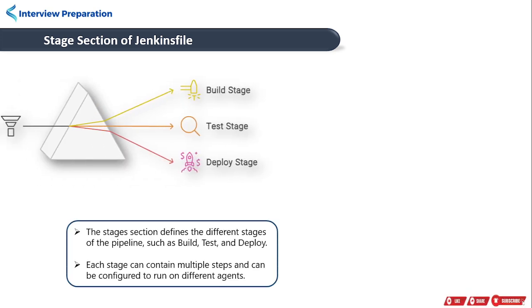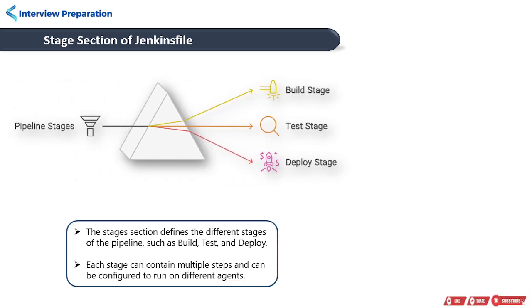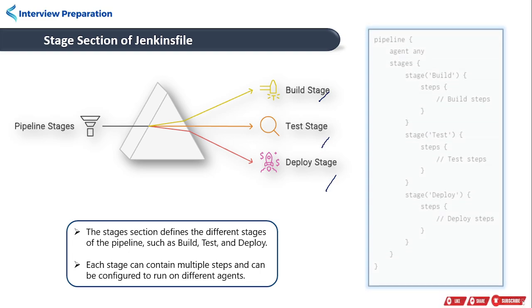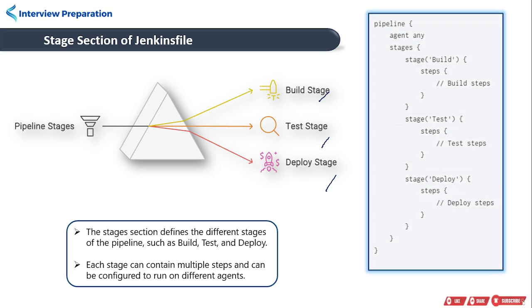Next, we have the stages section. The stages section defines the different stages of the pipeline, such as build, test, and deploy. Each stage contains multiple steps and can run on different agents if needed. Here is the example of the stages section in the Jenkinsfile configuration.